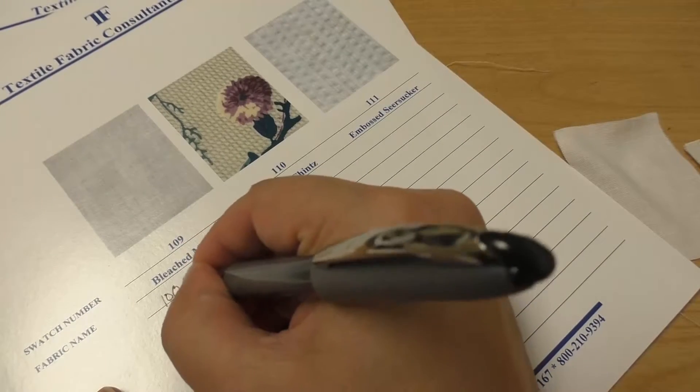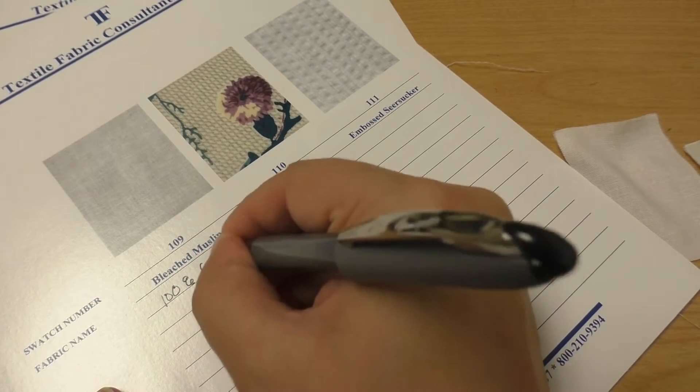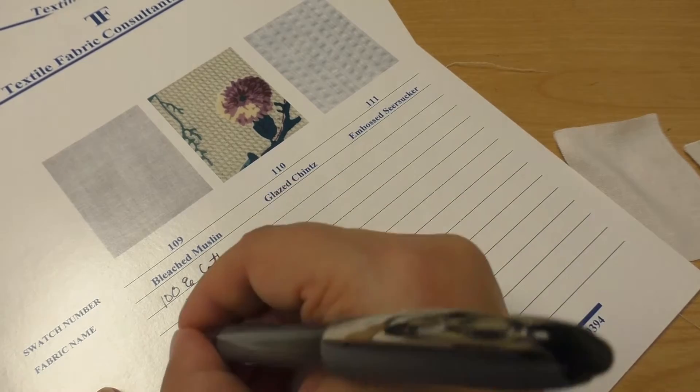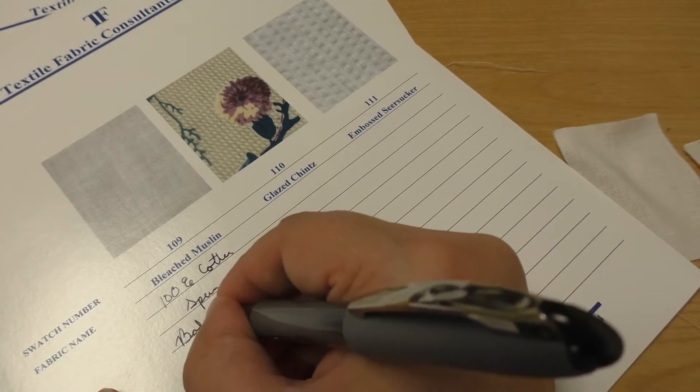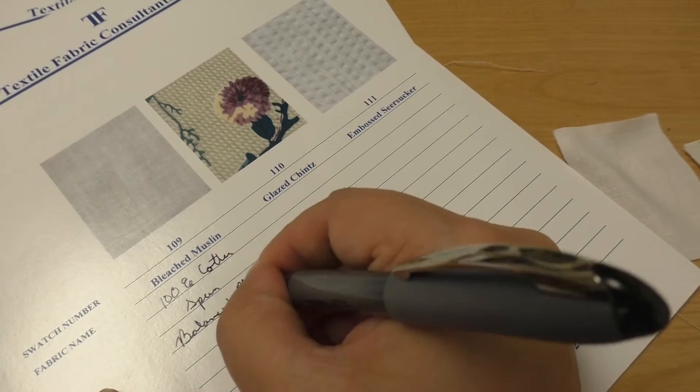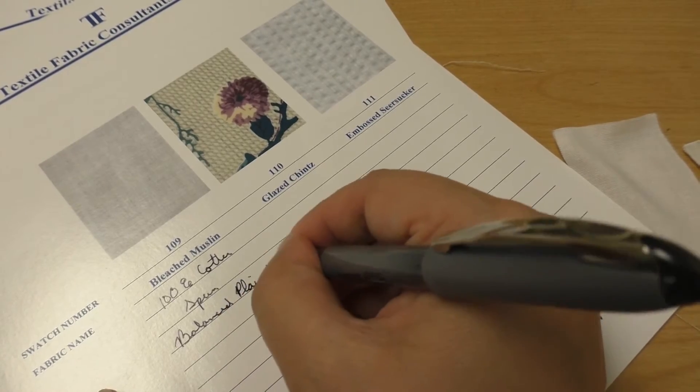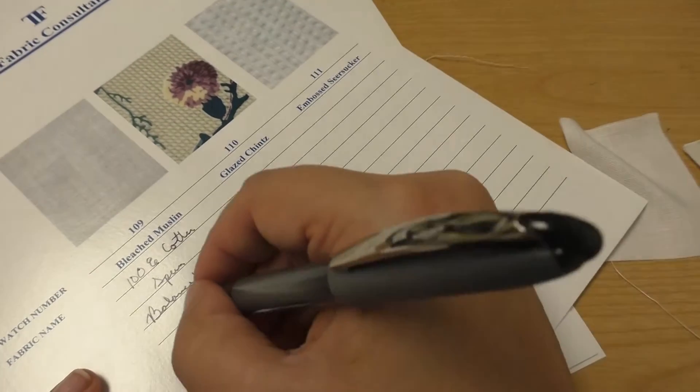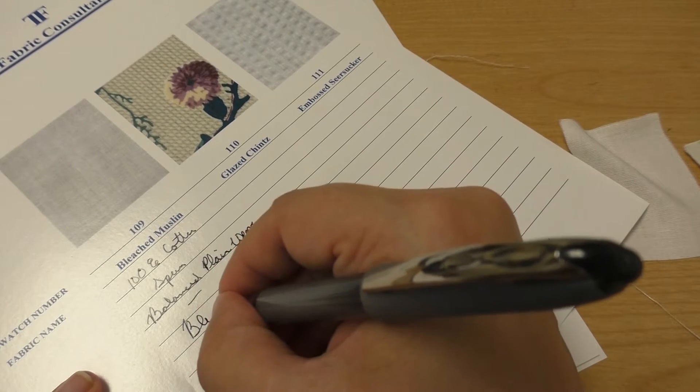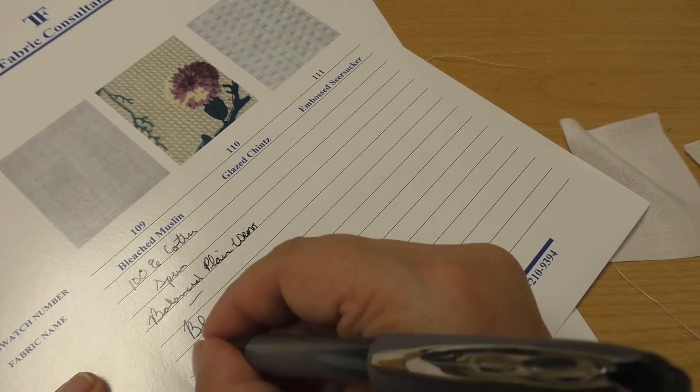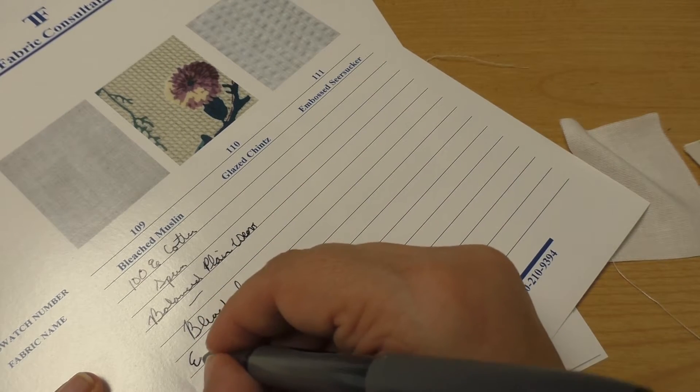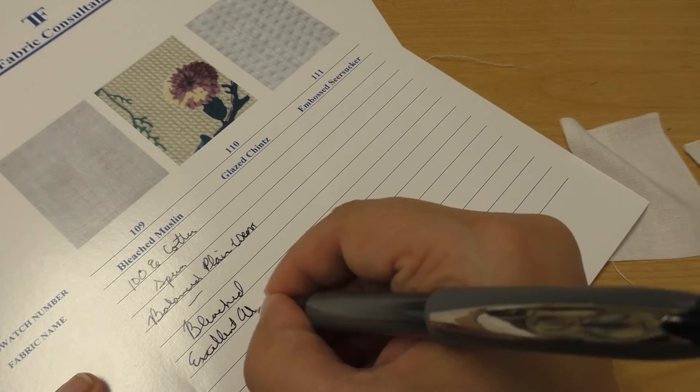Swatch 109 is bleached cotton. It is spun balanced plain weave, so this would be the muslin that's now been bleached. So no dye, but it has the finish bleached and the same properties pretty much hold.